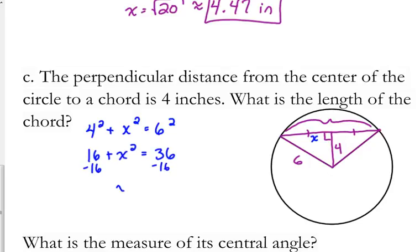So 16 plus x squared is equal to 36. Subtract 16 from both sides. It's the same thing that we got in the other problem. We just moved the distances compared to the last problem. This time, that's on the chord, it's not the perpendicular distance. This is the distance of the chord.